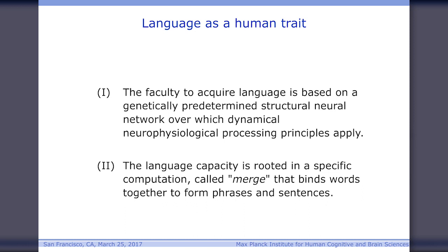I assume that the language faculty is based on a genetically predetermined structural neural network, over which dynamical neurophysiological processes and principles apply. We also have a fixed biological program for the development of this — it cannot go faster or slower. The second point I would like to make is that language capacity is rooted in a specific computation called merge, that binds words together to form phrases and sentences. If you do that more often, you get more complex structures.